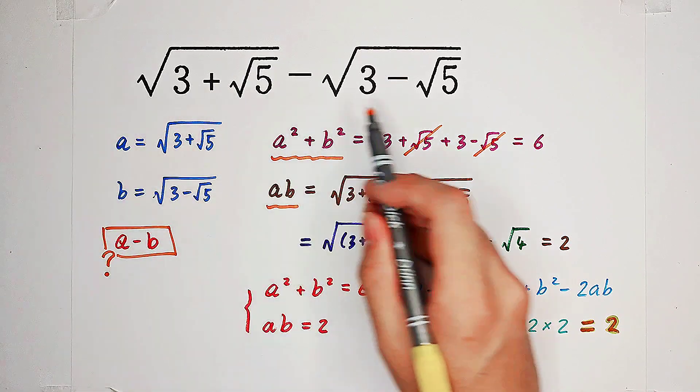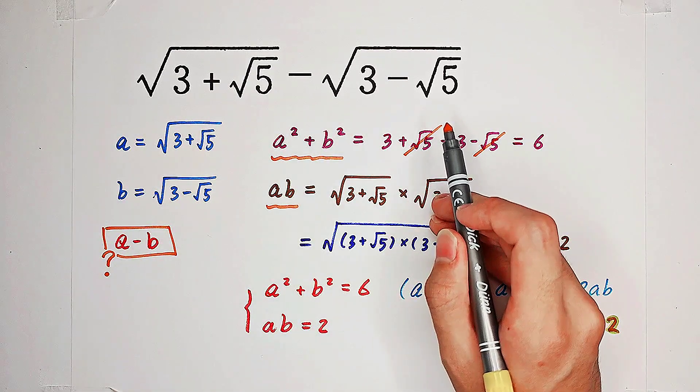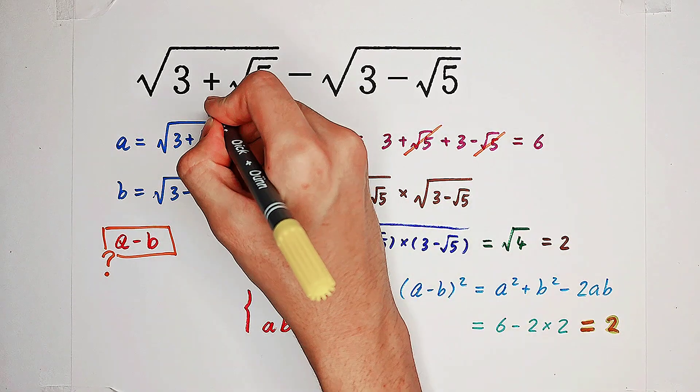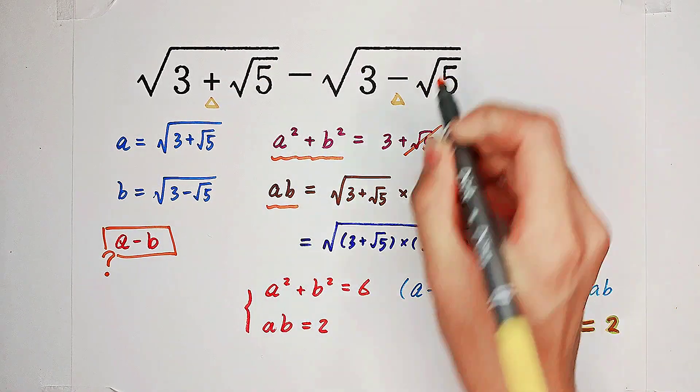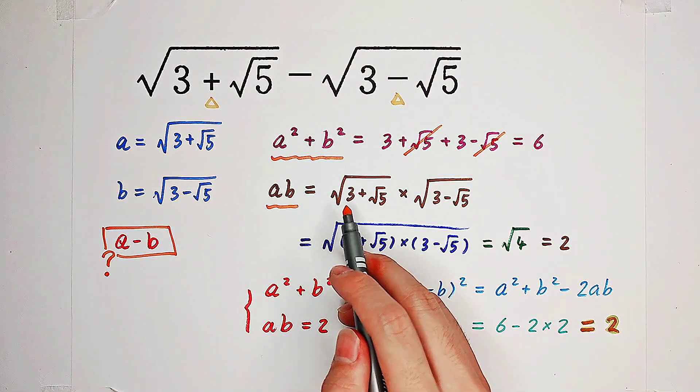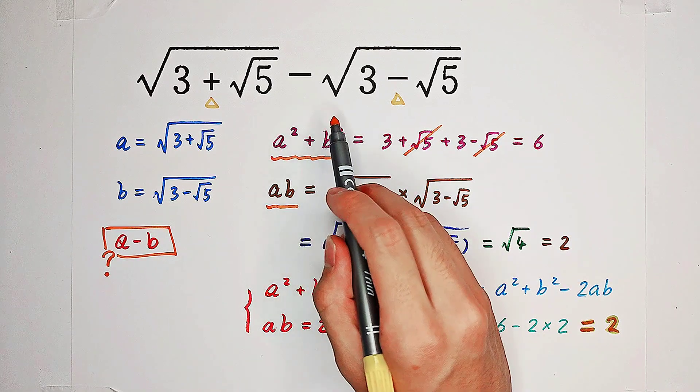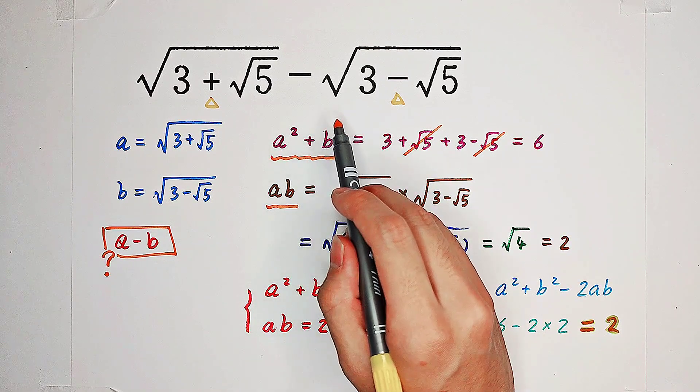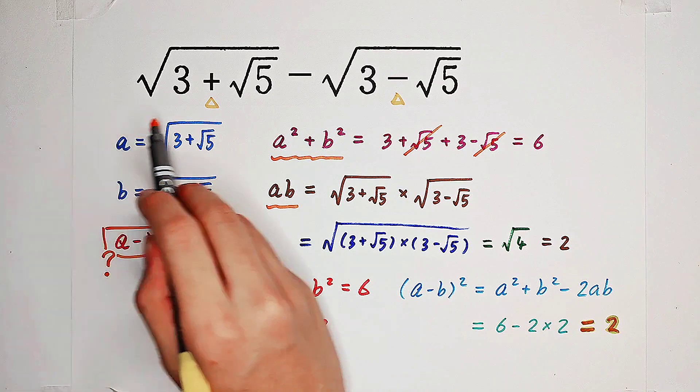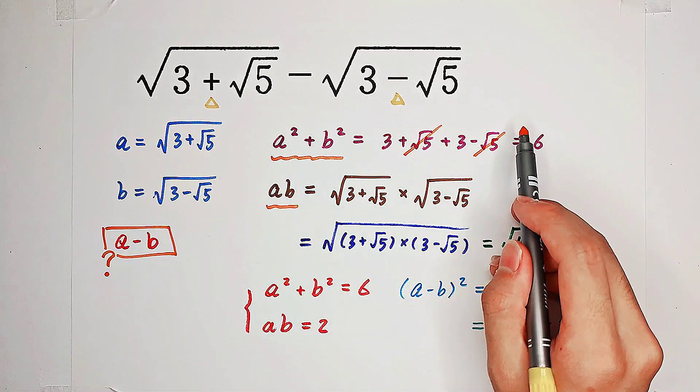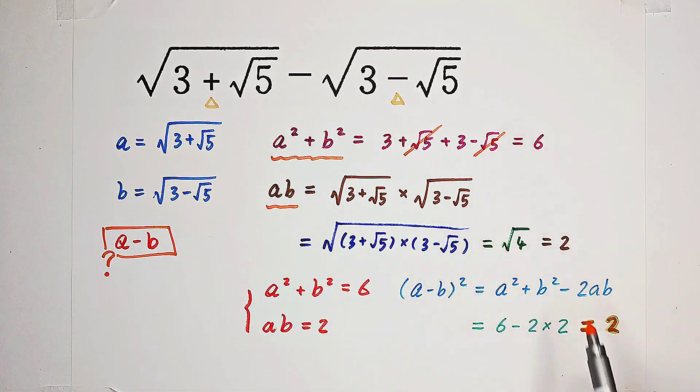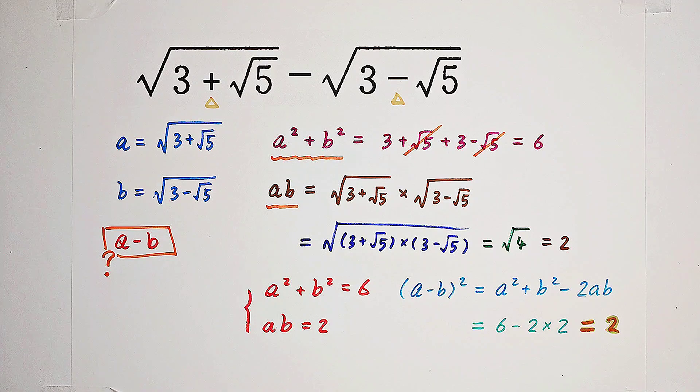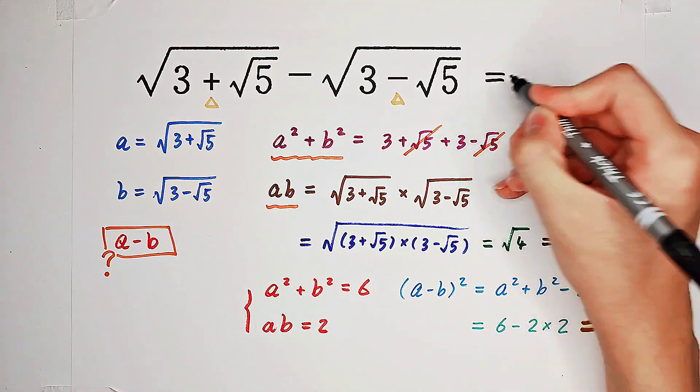Now, please have a look at our original term. Here is plus, here is minus. Square root of 3 plus square root of 5 is obviously greater than square root of 3 minus square root of 5. So our result must be positive, which means that it has to be square root of 2.